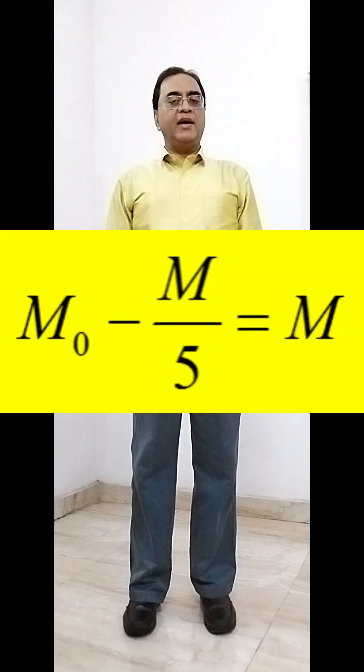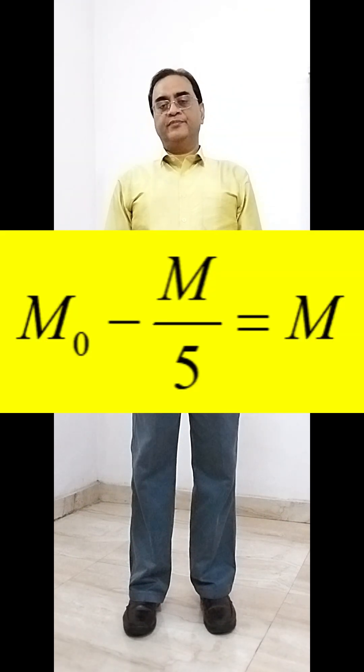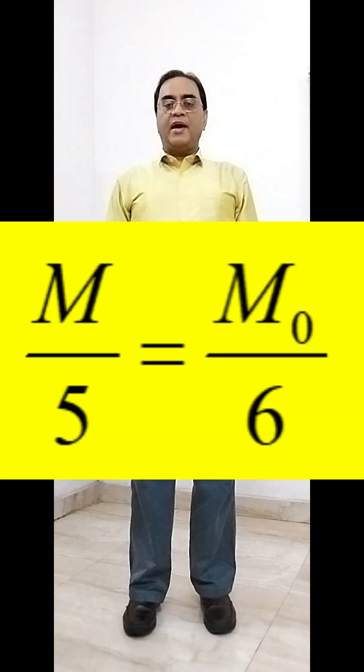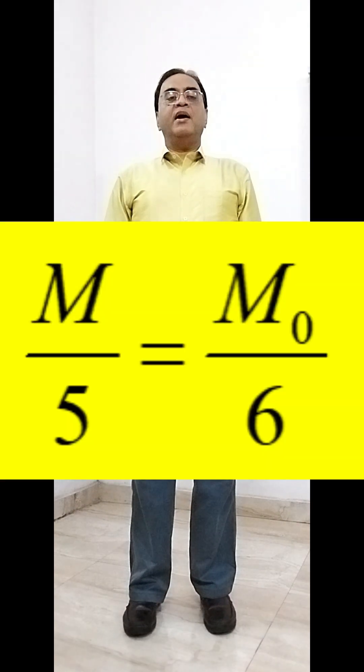If M0 is the initial mass of the shuttle and M is the final mass, then we have M0 minus M by 5 equal to M. So we get the mass of the satellite as M by 5, which is M0 by 6, and the final mass of the shuttle would be 5M0 by 6.